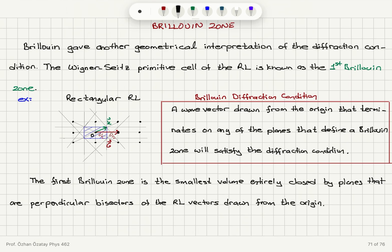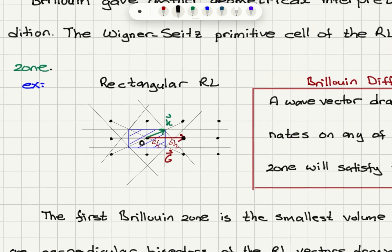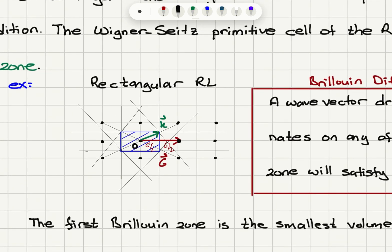Brillouin gave another geometrical interpretation of the diffraction condition. We define the Wigner-Seitz primitive cell of the reciprocal lattice as the first Brillouin zone. For a rectangular lattice, we connect each lattice point to its nearest neighbors, draw perpendiculars at the midpoints, and look at the smallest enclosed area. In the reciprocal lattice of a rectangular lattice, with lattice constants 2π/A and 2π/B, this corresponds to another rectangle.